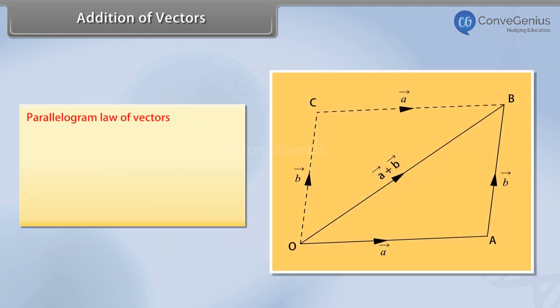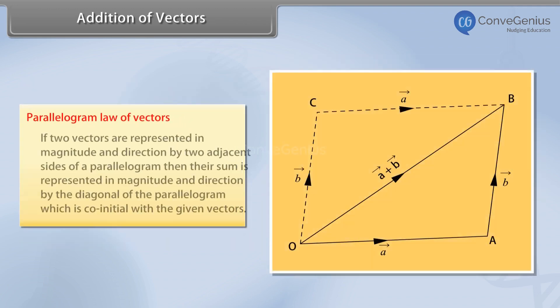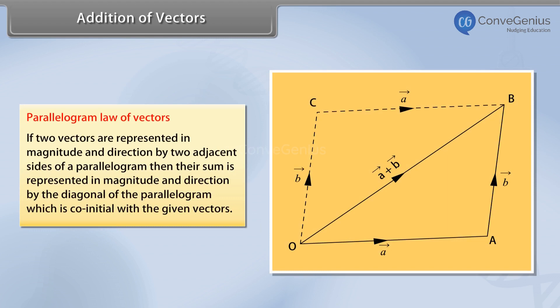Parallelogram Law of Vectors: If two vectors are represented in magnitude and direction by two adjacent sides of a parallelogram, then their sum is represented in magnitude and direction by the diagonal of the parallelogram, which is co-initial with the given vectors.